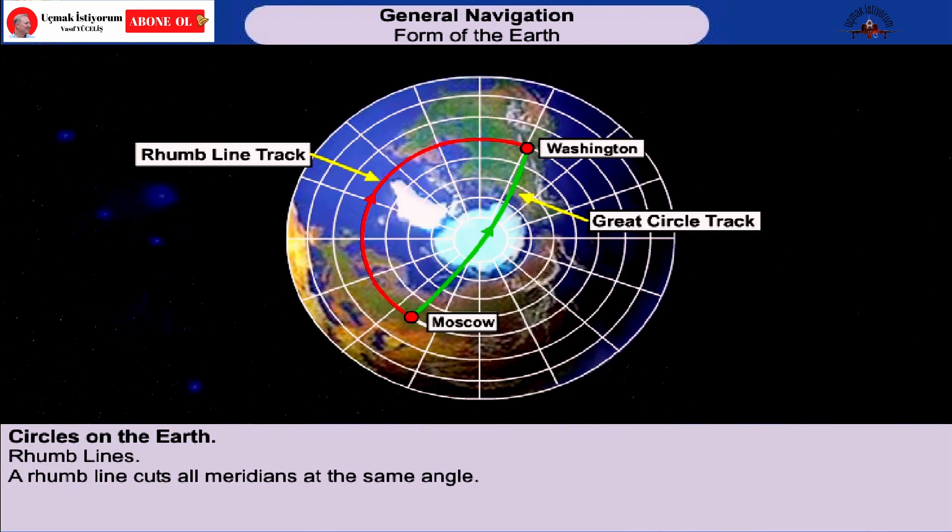A rhumb line is a regularly curved line on the surface of the Earth which cuts all meridians at the same angle — that is, a line of constant direction.